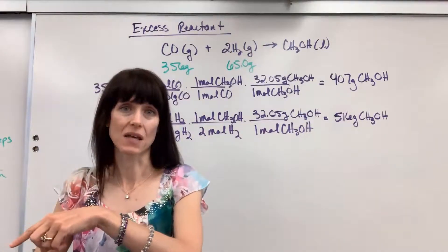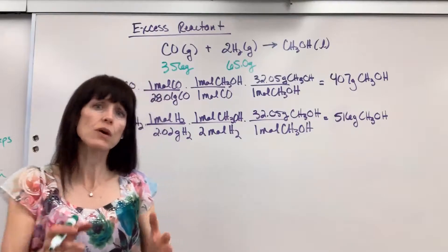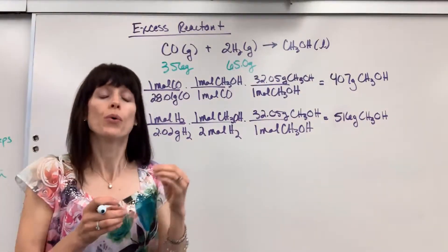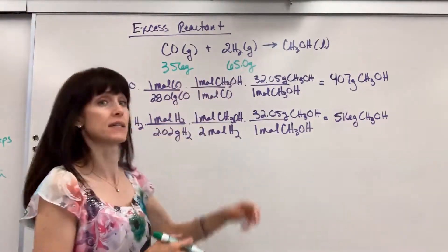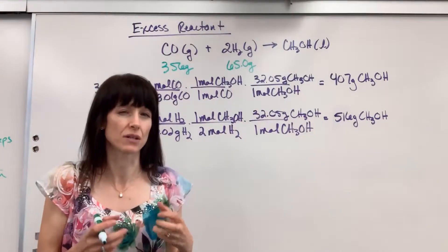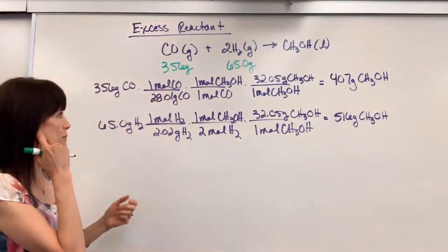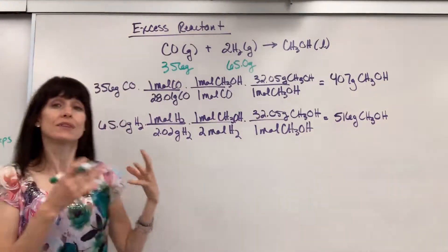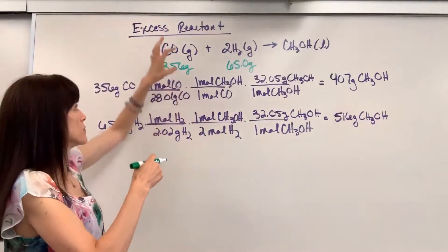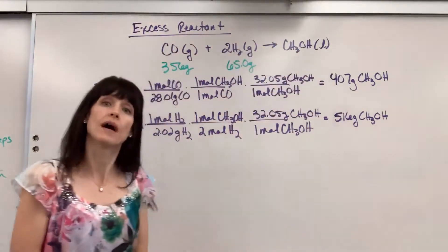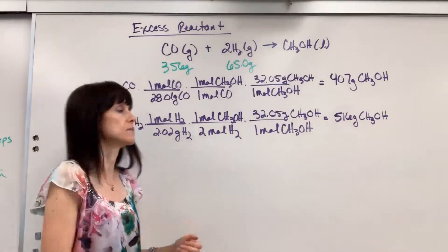That would be the excess. So do limiting reactant first. Which one of these reactants will be consumed first? Like the sugar that's going to be consumed first. We make our cookies. So this is how I prefer to do it. I'm going to compare both of the reactants to that product and do stoichiometry.